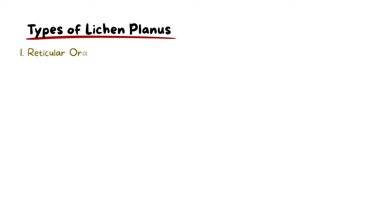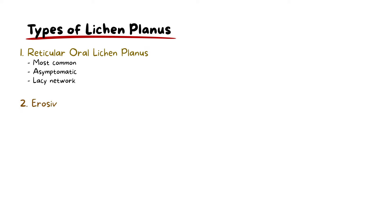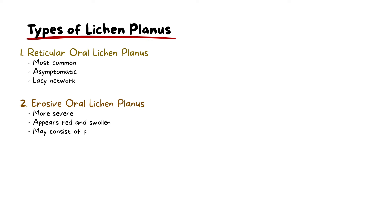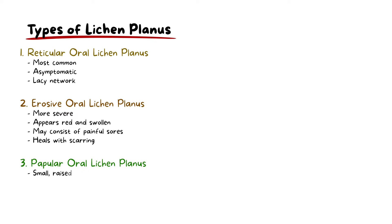Lichen planus can manifest in various ways and types in the oral cavity. Reticular oral lichen planus is the most common type and is usually asymptomatic, featuring a lacy network of white lines on the mucous membranes inside the mouth. The erosive type is a more severe form that presents with red swollen areas and sometimes painful sores or ulcers, which usually heal with scarring.